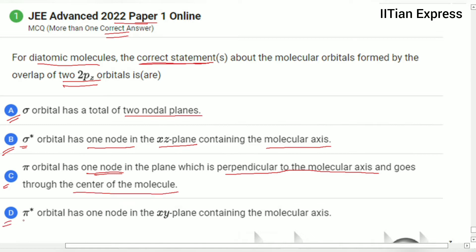Now come to option D. It is saying: pi star orbital has one node in the zy-plane containing the molecular axis. Now this question can be solved with the help of the below diagram.